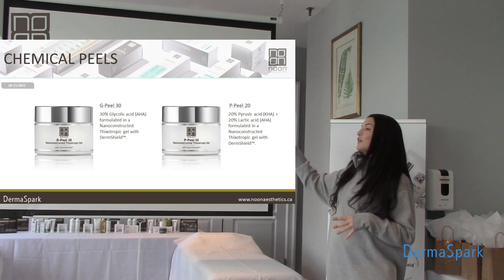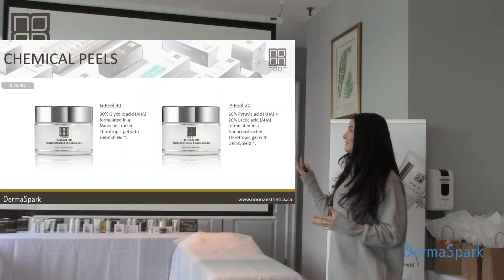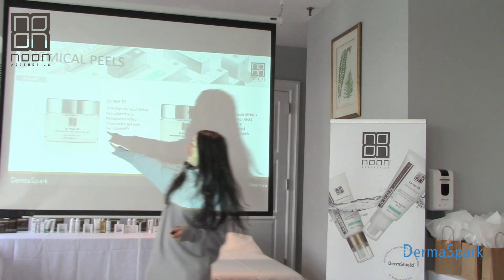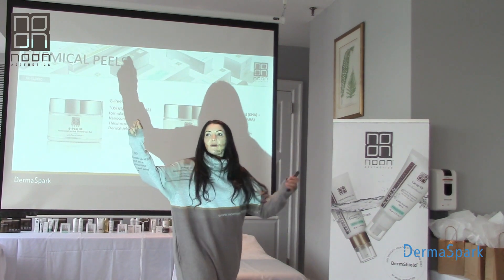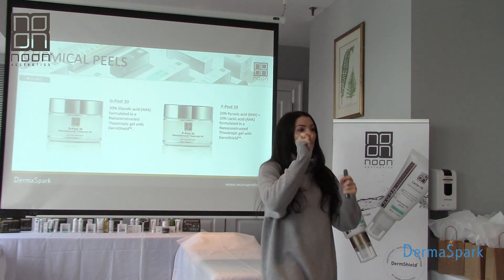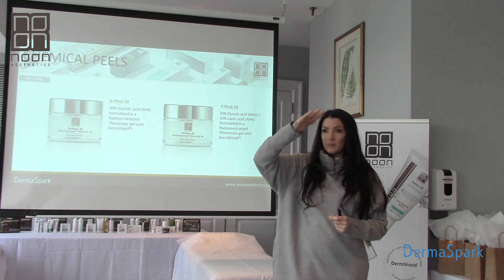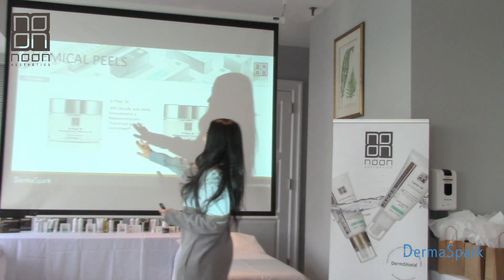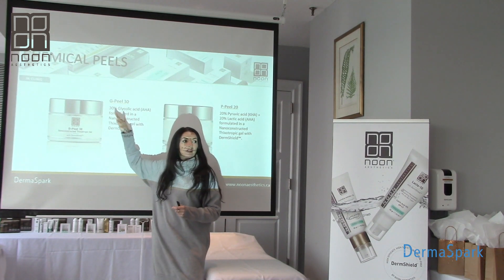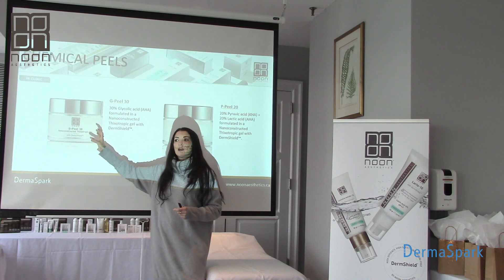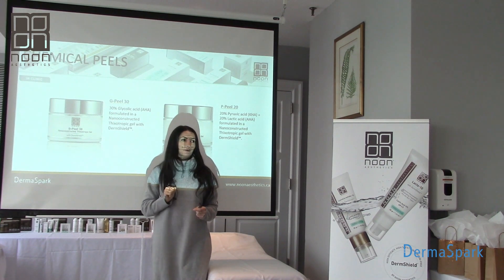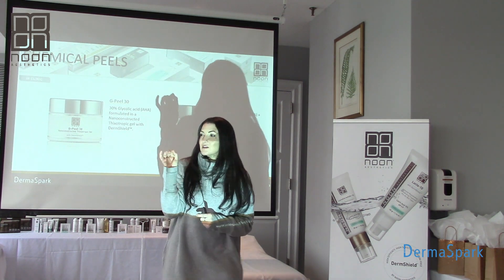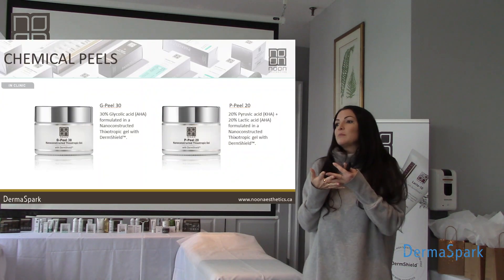We're using a 30% glycolic acid, but because we have DermShield in this product we can make it even better. We nanoconstructed that glycolic molecule, which means we've made it even smaller. Once that molecule gets smaller, it won't just rapidly penetrate the layers — it's going to fly through the layers of the skin. So even though it is a 30% glycolic acid formula, because of the nanoconstruction it acts like a 50% glycolic.